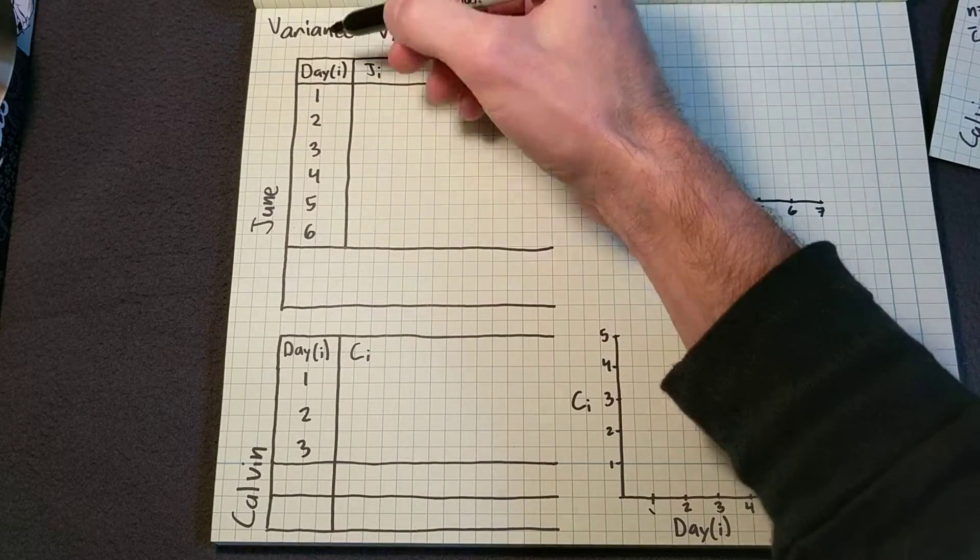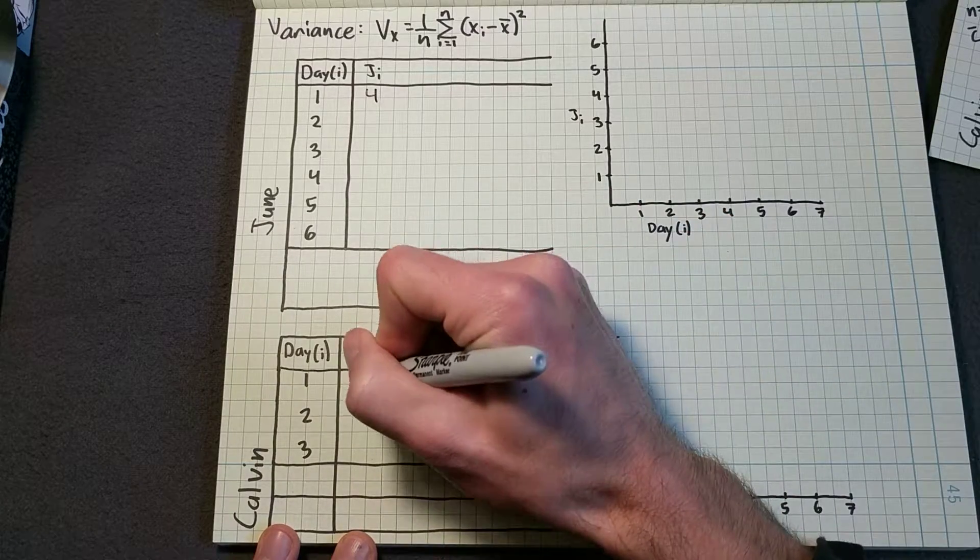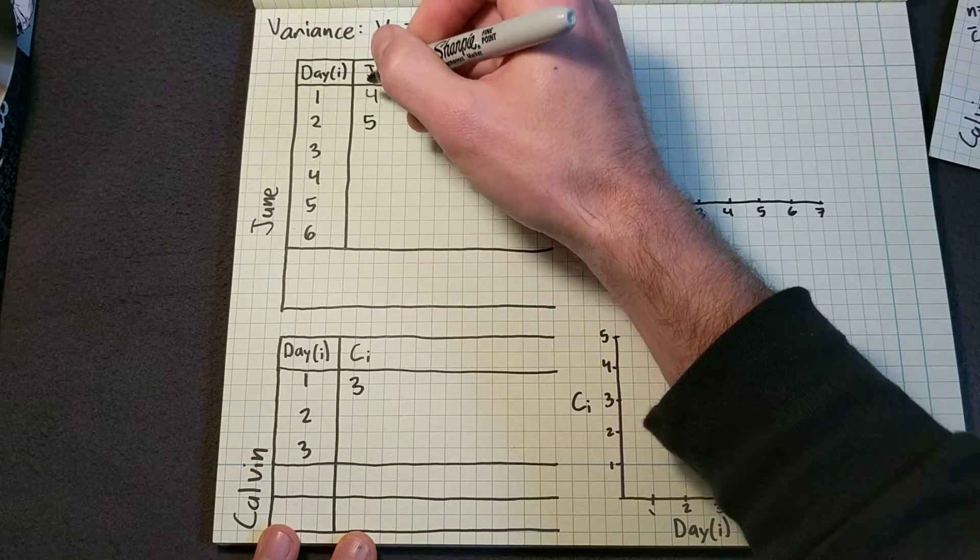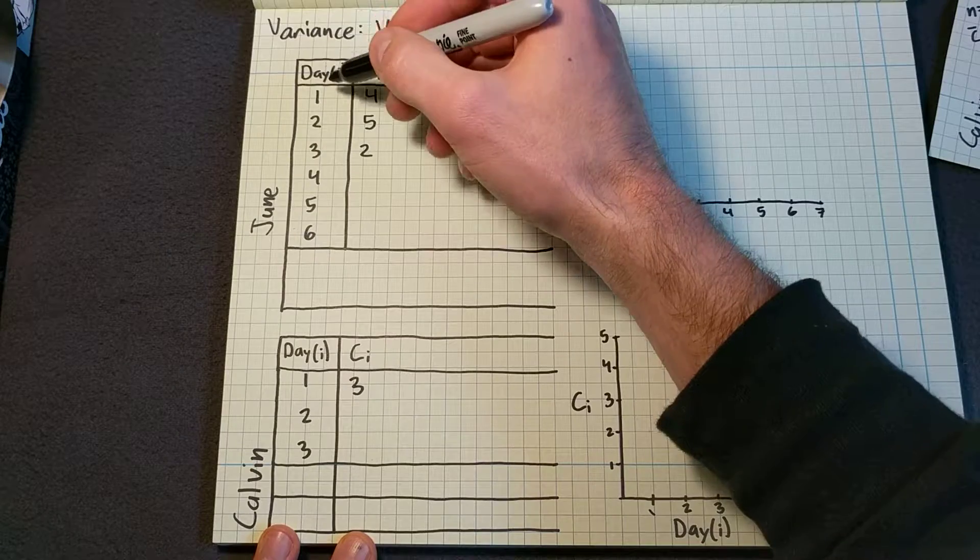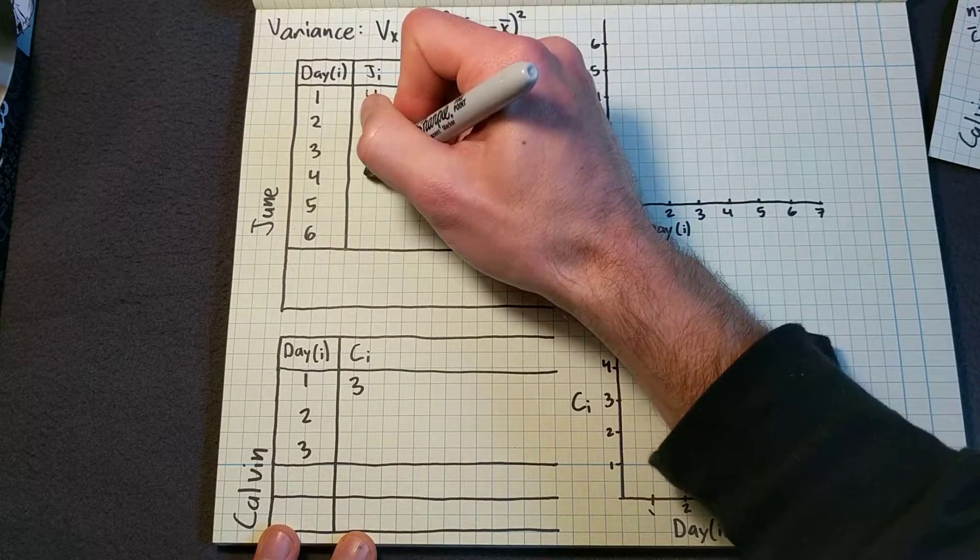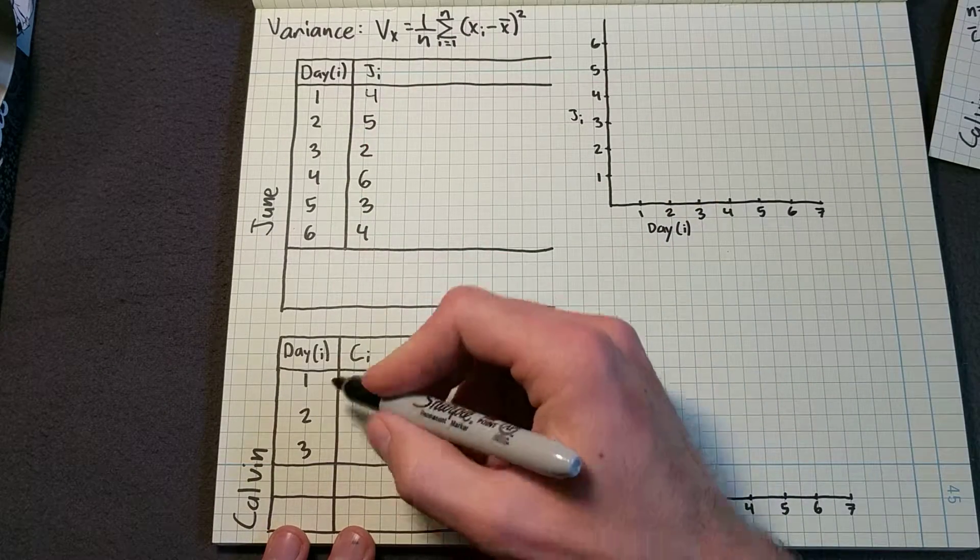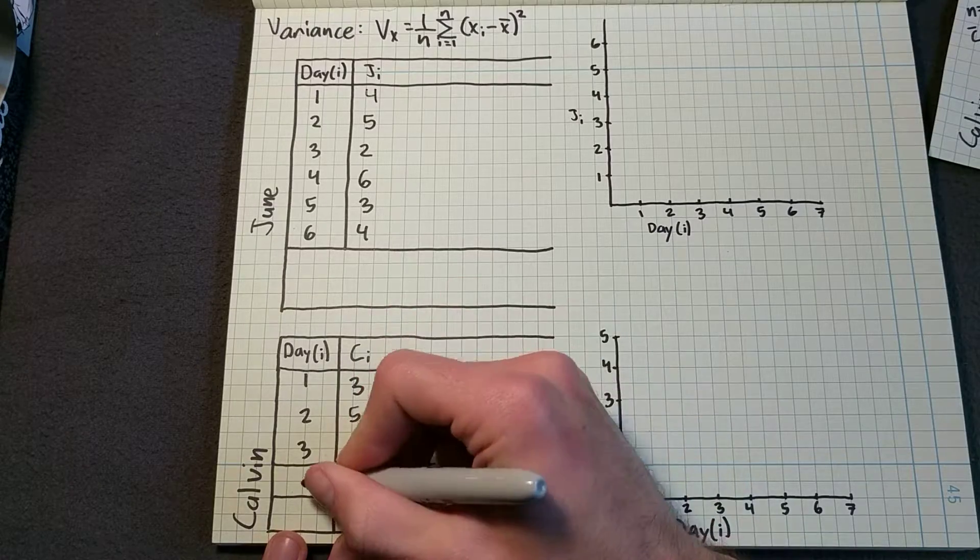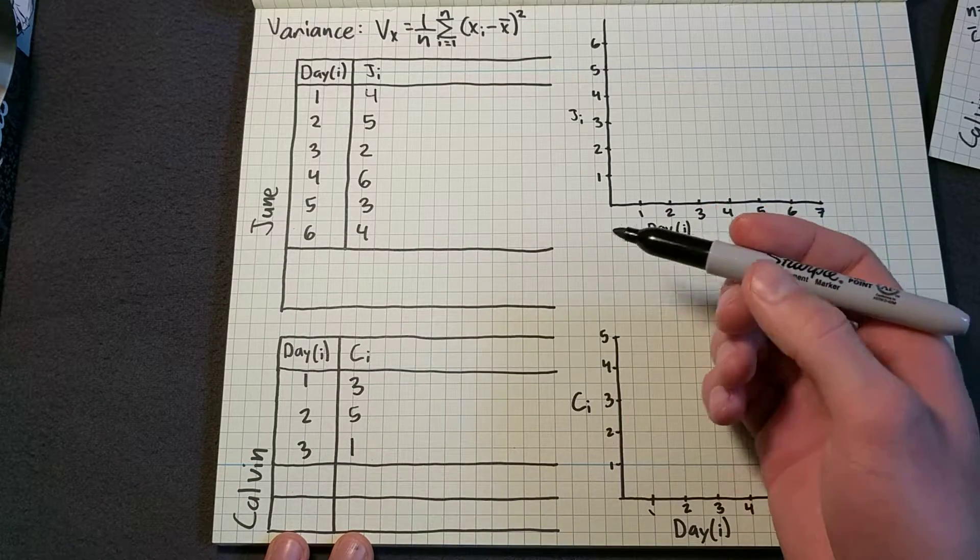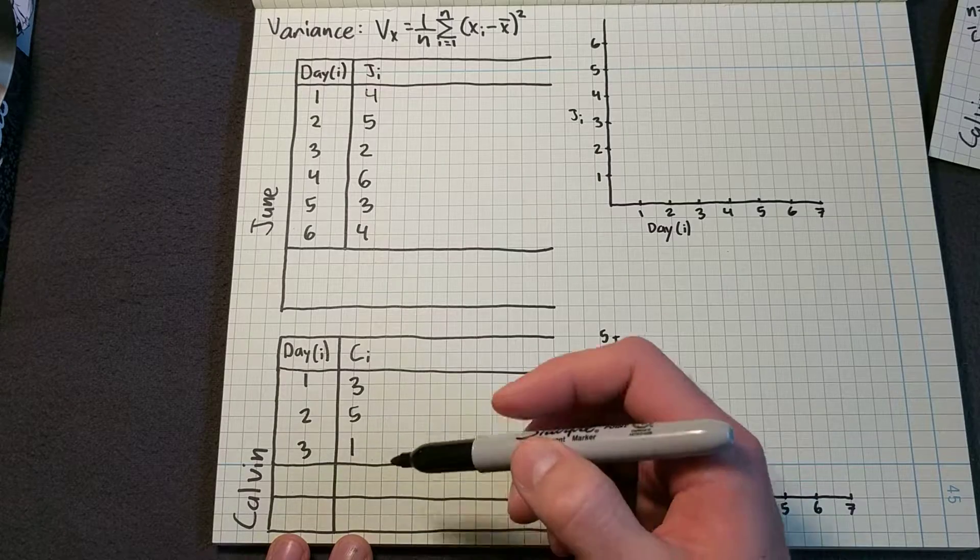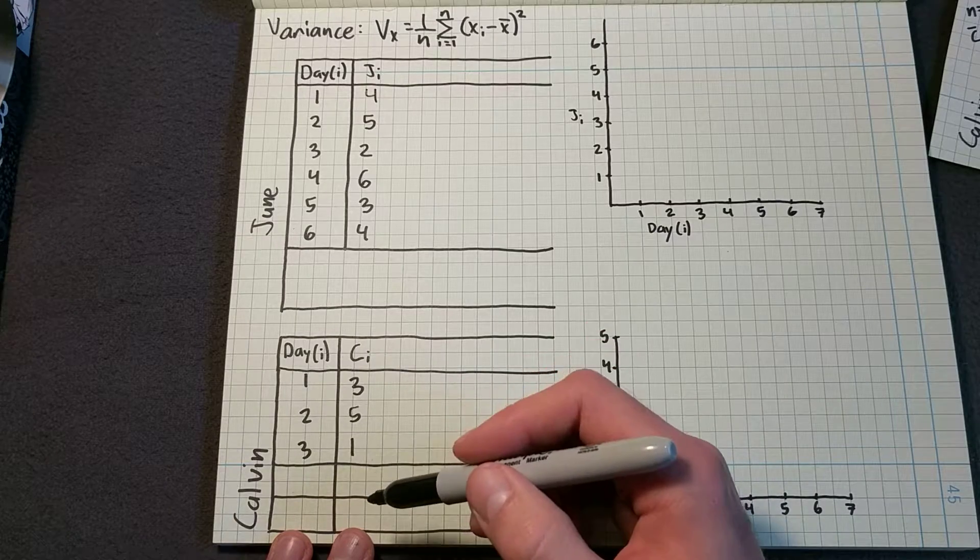So, on the first day, June eats four and Calvin eats three. I'm just going to go straight down the line here. So June eats four, five, two, and then six, three, four. And Calvin on days two and three eats five and one. But then on day four, I'm going to let my dad take care of Calvin. So for days four, five, and six, I actually don't get to measure how much food Calvin eats. But I still want to do my experiment.